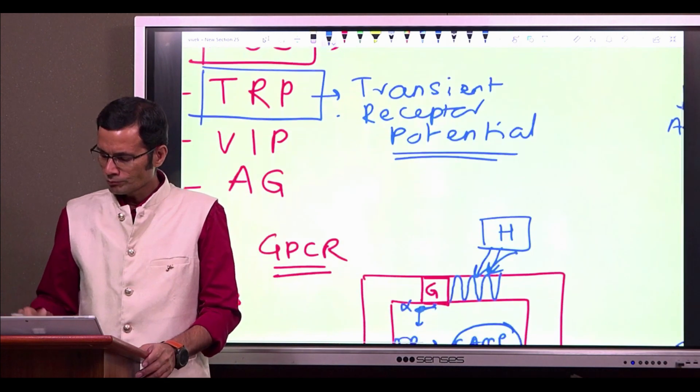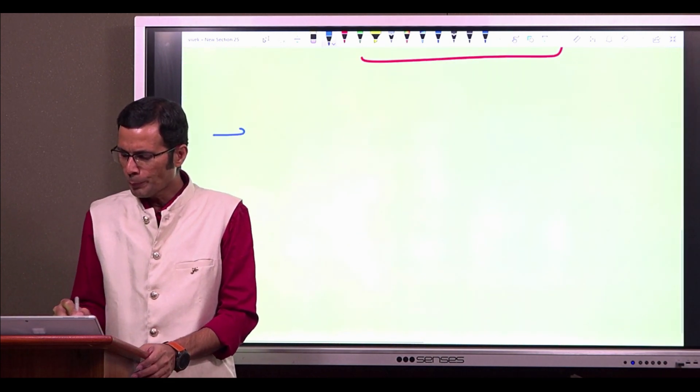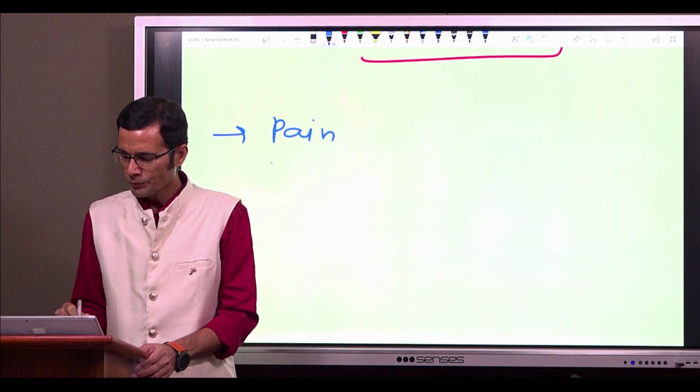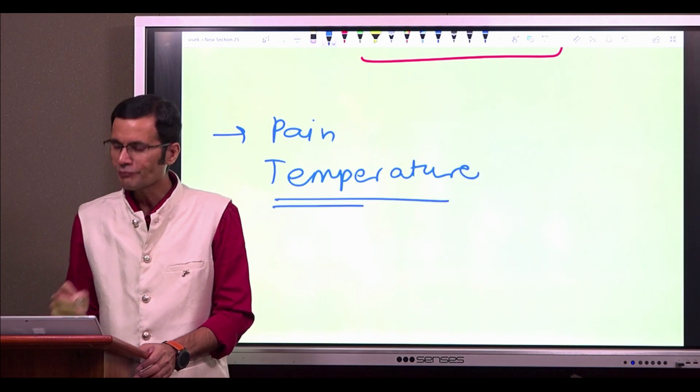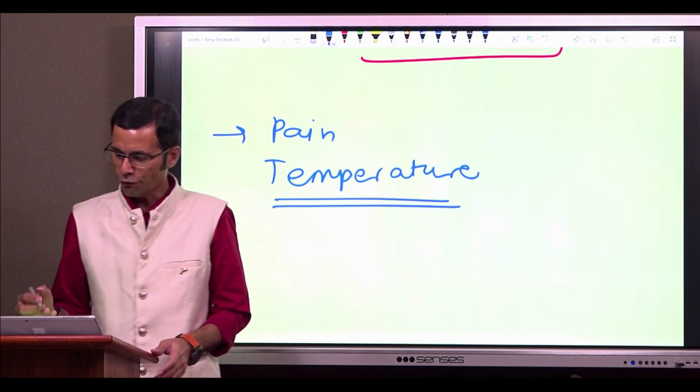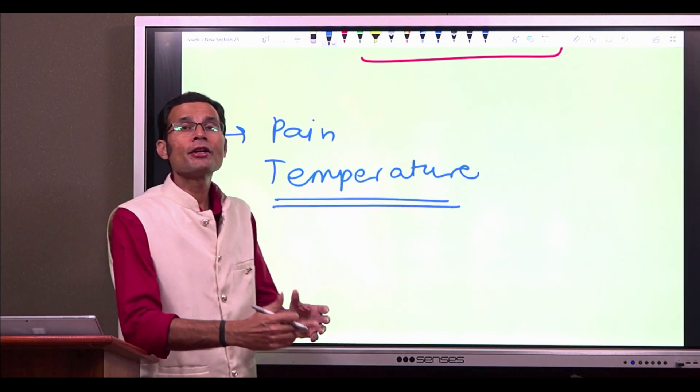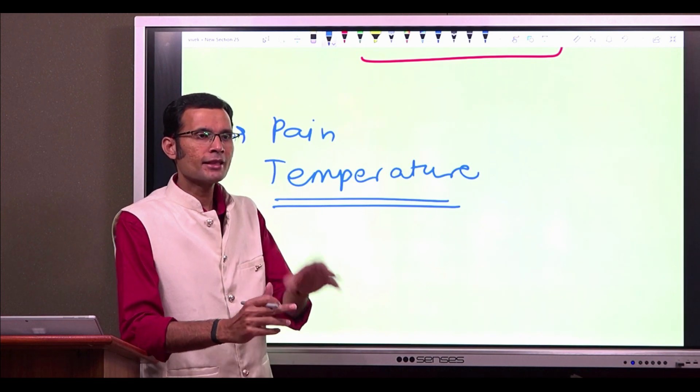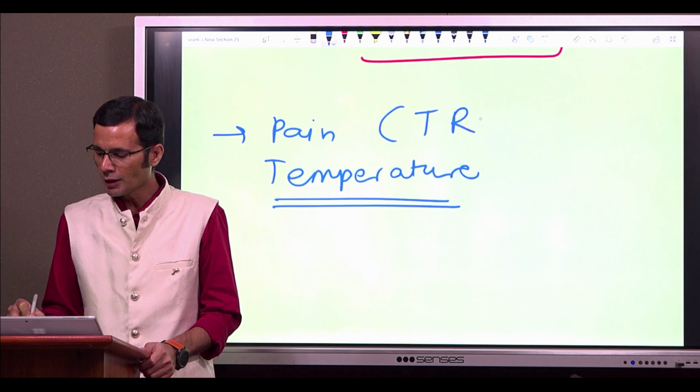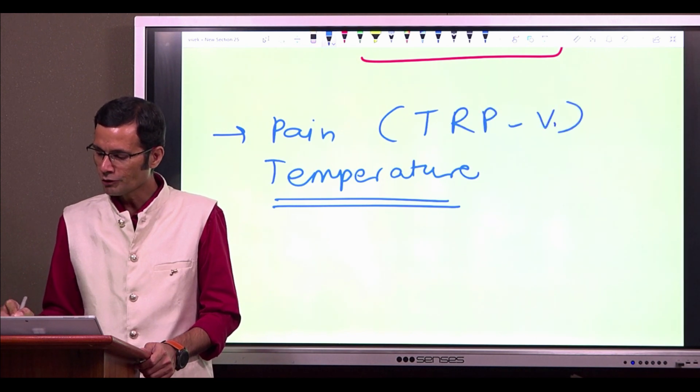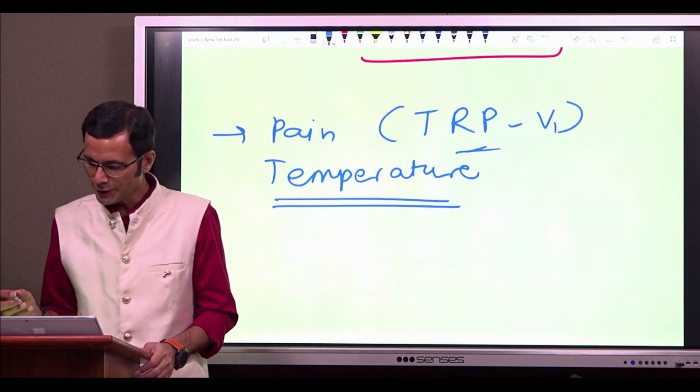So pain receptors, temperature receptors, they belong to this family. For instance, vanilloid receptor, it detects the sensation of pain. So it would be described as TRP-V or V1 or vanilloid receptor basically.